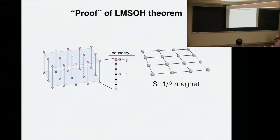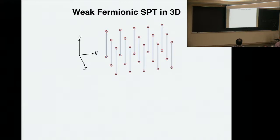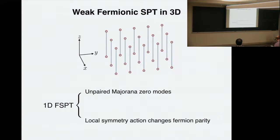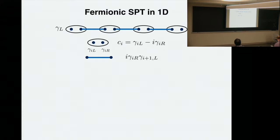This immediately suggests generalizations to other systems. You can replace the three-dimensional bulk with other kinds of weak SPT phases. For example, you can replace the Haldane chain with some other 1D SPT. You can consider a weak fermionic SPT in 3D dimensions, where each 1D chain is a fermionic SPT in one dimension. A fermionic SPT in 1D comes in two varieties: either it has unpaired Majorana zero modes on the boundary — known as the Kitaev chain or Majorana chain — or if you look at how symmetry acts on the boundary, it has an even number of Majorana modes but the symmetry action changes fermion parity. This is a realization of the Kitaev chain in one dimension, easily realized using a p-wave superconductor, with dangling Majorana modes on the two ends.